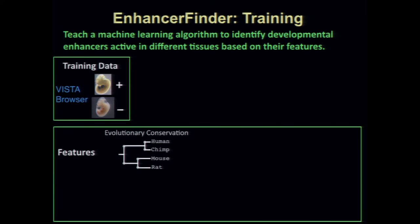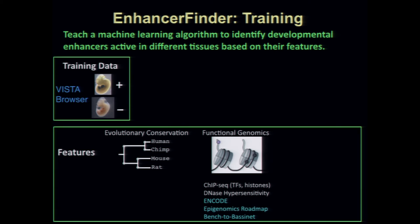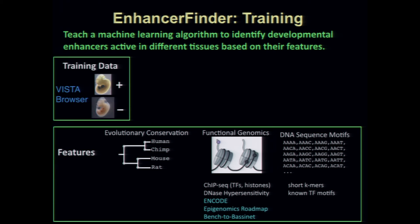We used genomic features including evolutionary conservation of the sequence, functional genomics data at the potential enhancer location, sequence motifs of known binding sites and position-specific weight matrices, as well as enumerating all k-mers to capture binding sites for transcription factors without a good motif model. All three types of data were predictive — they predicted partially overlapping sets of enhancers, and each predicted some that the others did not. The model including all three types of data was the best performing by far. This differed from the chromatin looping predictions where most power came from functional genomics data.